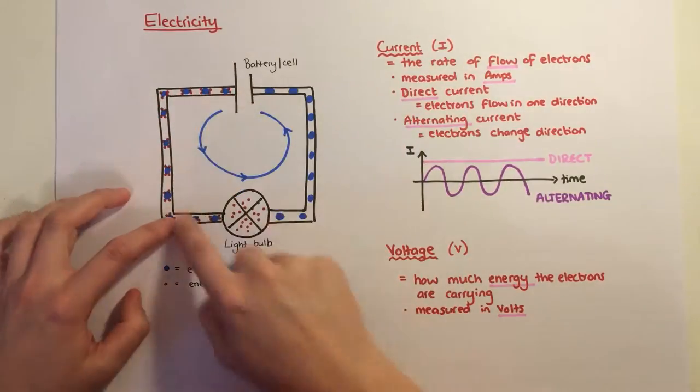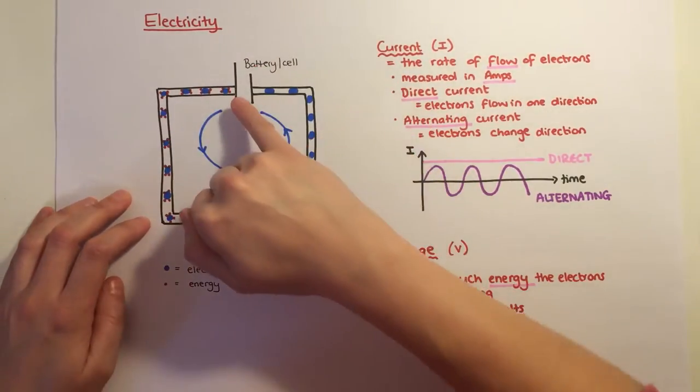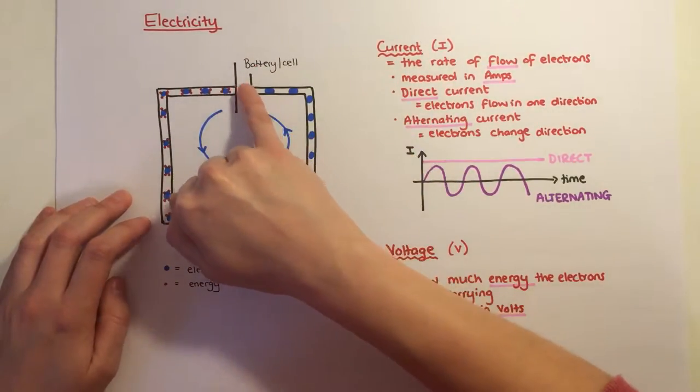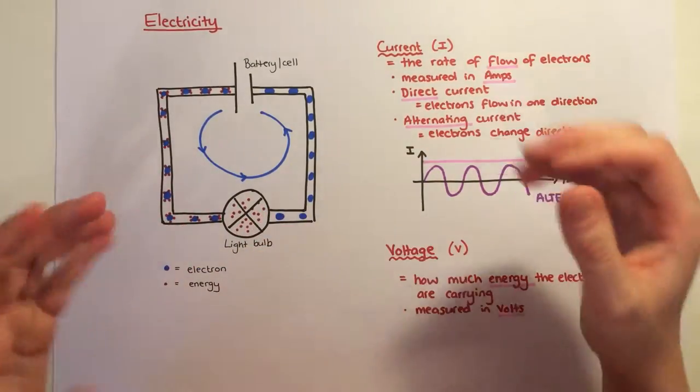We have particles called electrons. These are the blue things and they move around when the battery is connected. They carry energy, the red dots from the battery, and they take it to the components such as the light bulb which then uses it.